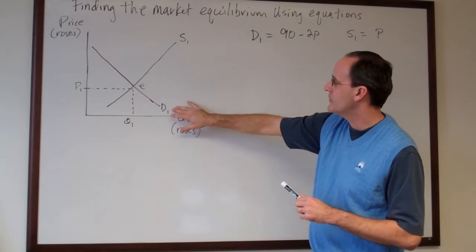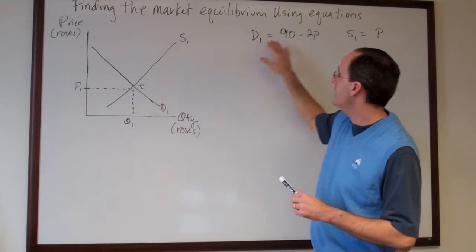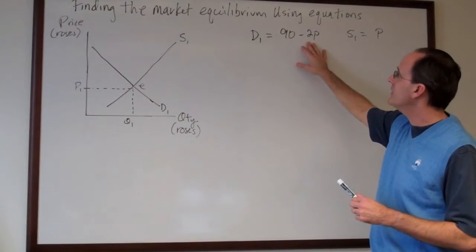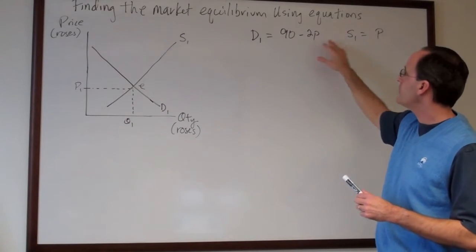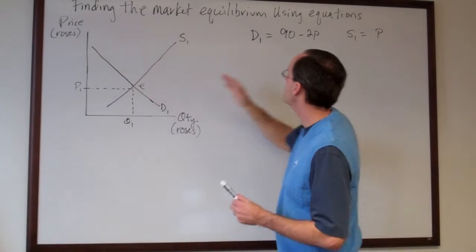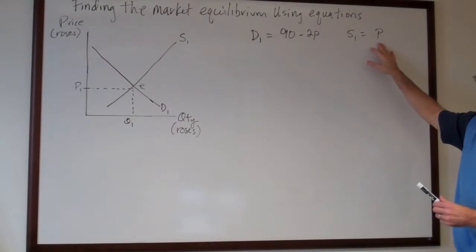We're going to take demand curve D1 here and think of it as being the expression ninety dollars minus two times the price and we're going to think of the supply curve right here S1 as simply being a function of the price itself.